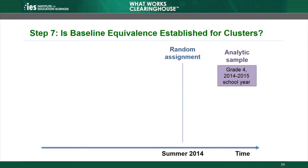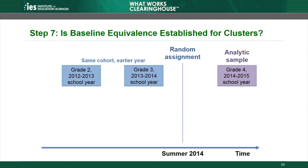The review protocol may specify that equivalence could be established using one or more of three groups of students within the same schools from the analytic sample. One option is students in the same cohort from an earlier year — in this case, grade 3 students in 2014. Most of the grade 3 students might be the same students in the analytic sample when they were one year younger, but for cluster equivalence the two sets of students do not need to be identical. It would also be acceptable to use students from an even earlier year, such as 2013, when the students were in grade 2.